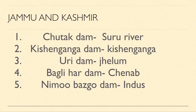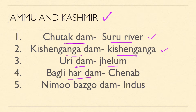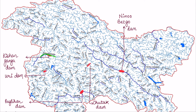The first state today is Jammu & Kashmir. There are 5 important dams: Chutak Dam on the Suru River, Kishanganga Dam on the Kishanganga River, Uri Dam on the Jhelum, Baglihar Dam on the Chenab, and Nimmo Bazgo Dam on the Indus River.